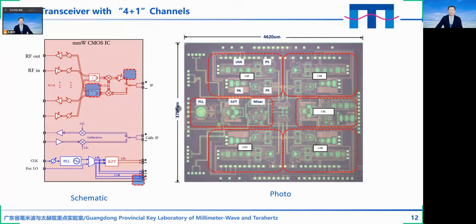Now let's look at the transceiver with four plus one channels. The four-plus-one channel chip has four baseband transceiver channels and one channel for phase and amplitude calibration. The four channels each have their own variable gain low noise amplifier, variable power amplifier, and phase shifter. They share the same up-converter, down-converter, and I/Q amplifier. The calibration channel shares a phase-locked loop source with the four transceiver channels, resulting in a seamless transceiver chip.